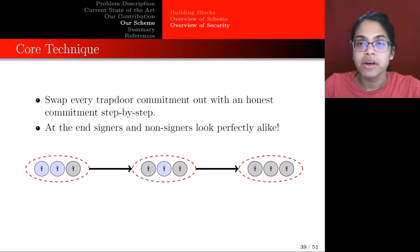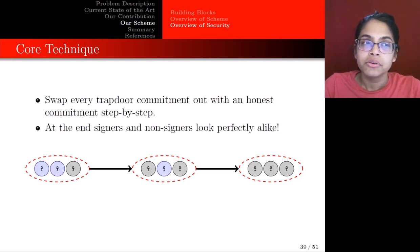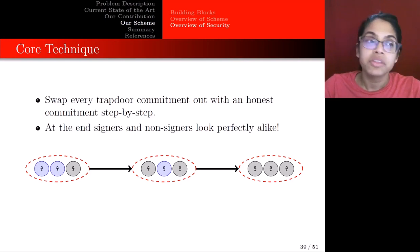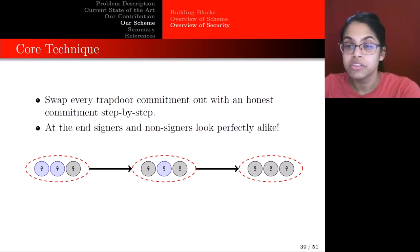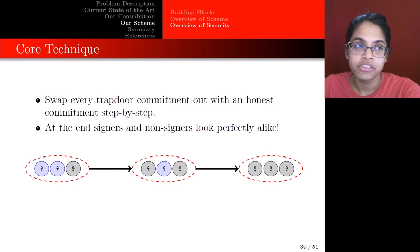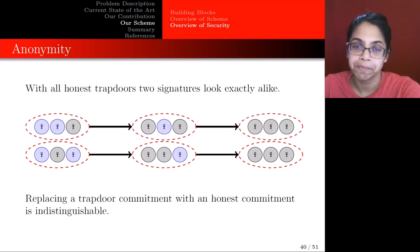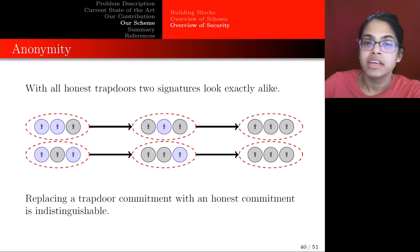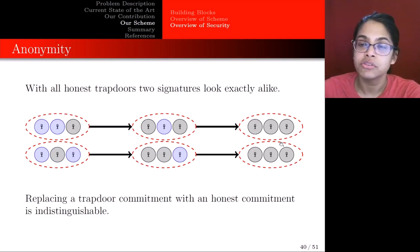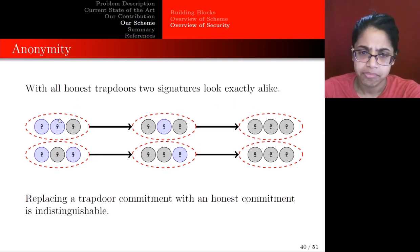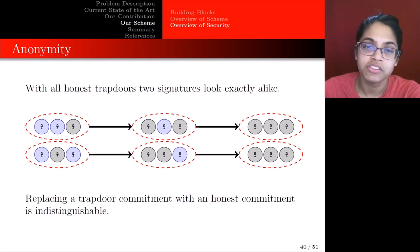Now I'd like to give an overview of security. To prove both anonymity and unforgeability, the technique is to swap every trapdoor commitment out with an honest commitment, step by step. At the end, signers and non-signers look perfectly alike because everything uses honest commitments. With anonymity, at the end with all honest trapdoors the two signatures are going to be exactly alike, and because we went step by step replacing trapdoor commitments, we can conclude that the original two sets must have been indistinguishable as well.